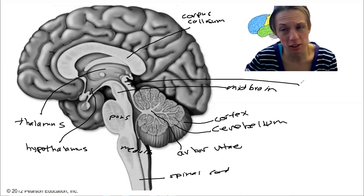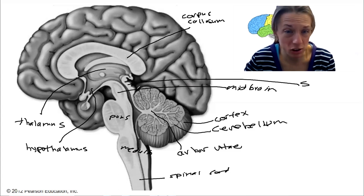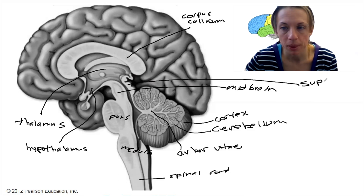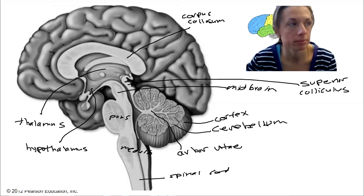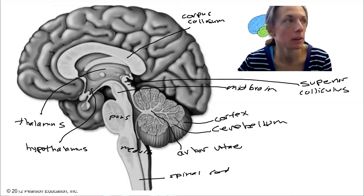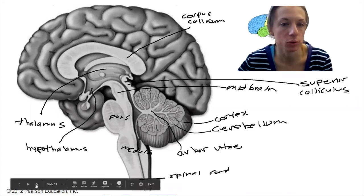This one looks a little different in this picture. It might have been actually hard for you to determine what was epithalamus and what was superior colliculus in this image. It's actually a little bit more obvious, I think, in the sheep brain. Okay, that's the sagittal view.